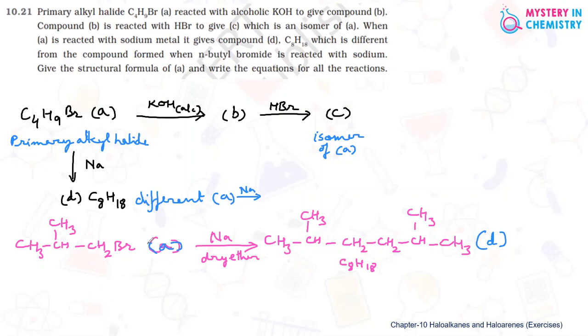Now, come to the next part. What is B and C? So B is when it is treated with alcoholic KOH. The compound found is alkene.